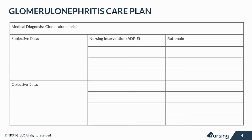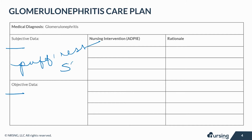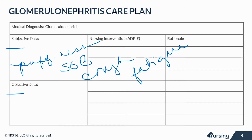Let's take a look at some of the subjective and objective data that your patient with this issue may present with. Remember, subjective data are things based on your patient's opinions or feelings — like puffiness of the face in the morning, urinating less frequently, shortness of breath, cough, fatigue, and recent significant change in weight.